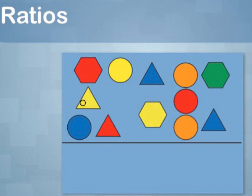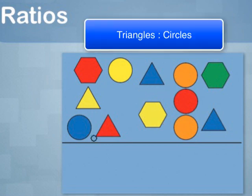Here is a collection of triangles, hexagons, and circles of different colors. And there are numerous ratios that can be formed. For example, the ratio of triangles to circles is four to five, four-fifths, or four to five.